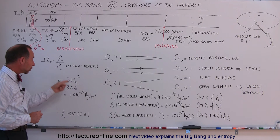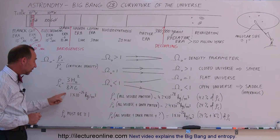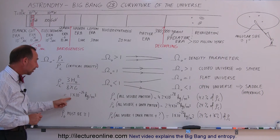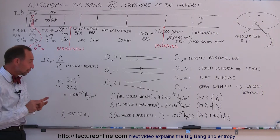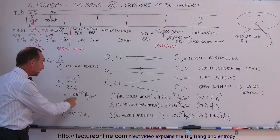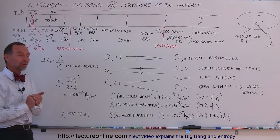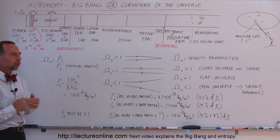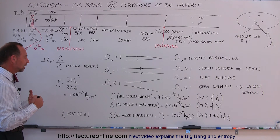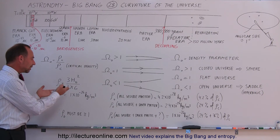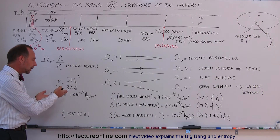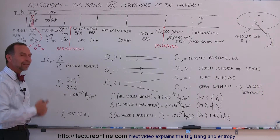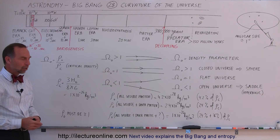When we plug in the correct values, the end result is that the critical density of the universe is 1 times 10 to the minus 26 kilograms per cubic meter. So the question is: is the density greater than that, equal to that, or less than that?